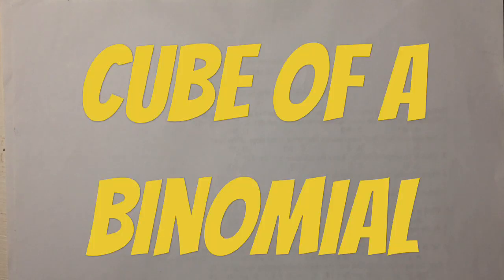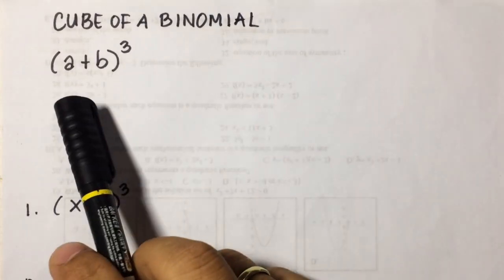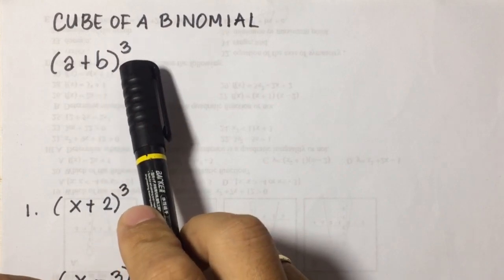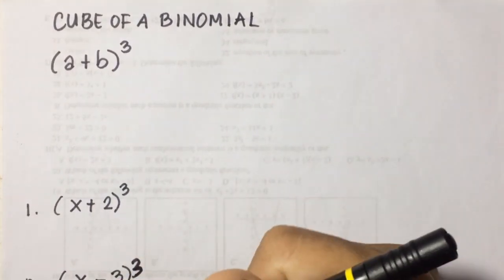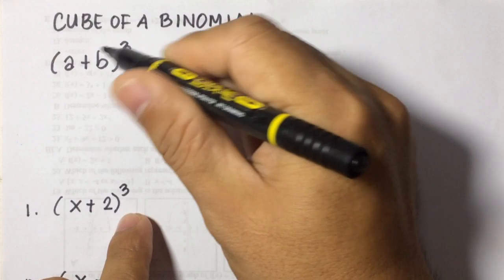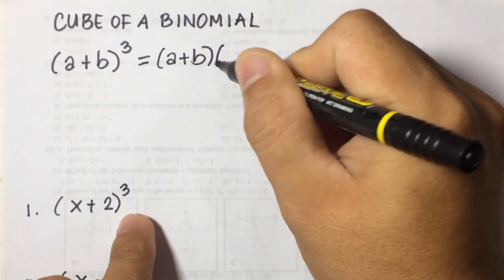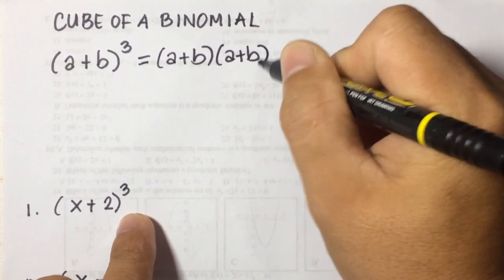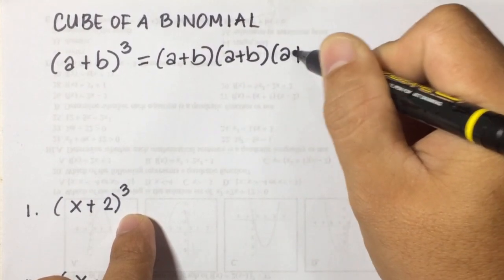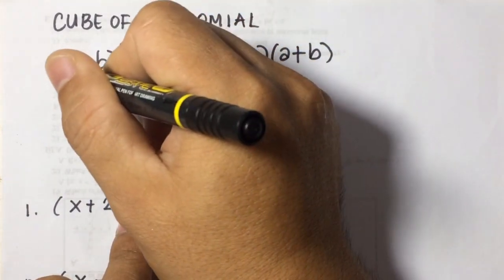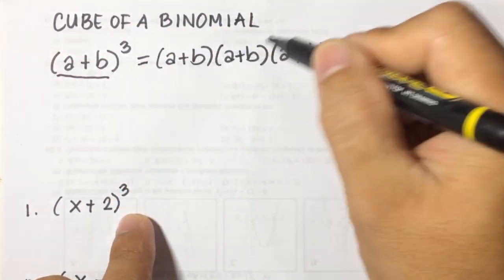Hi guys, in this video I'm going to discuss the cube of a binomial. So I have here a binomial a plus b being cubed, raised to the power of 3. We can write a plus b cubed as a plus b times a plus b times a plus b — we're just multiplying the binomial 3 times by itself.